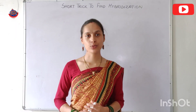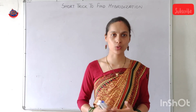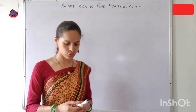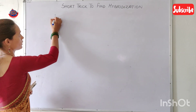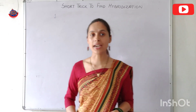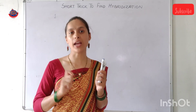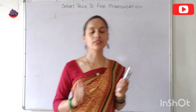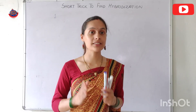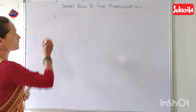First of all, I will tell you the different steps of this trick. You have to learn those steps, and after learning them it becomes very easy to find out the hybridization of different molecules. The first step is: you have to add the valence electrons of all the atoms which are present in the given molecule or ionic species.